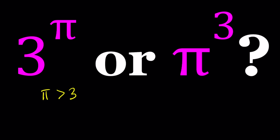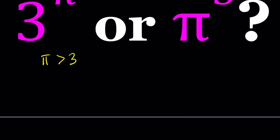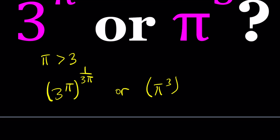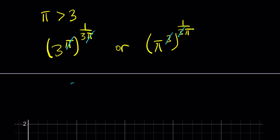Here's what we're going to do. We're going to raise both sides to the power 1 over 3π. We can cancel out the same things: pi divided by pi is 1, and 3 divided by 3 is 1. So this gives us 3 to the power 1 over 3, and pi to the power 1 over pi. Those are the two numbers I'm going to be comparing.